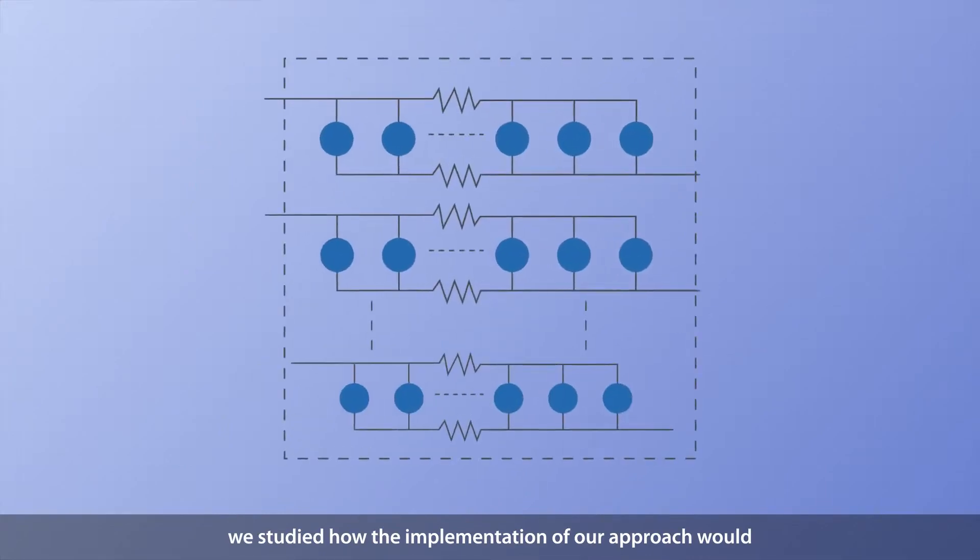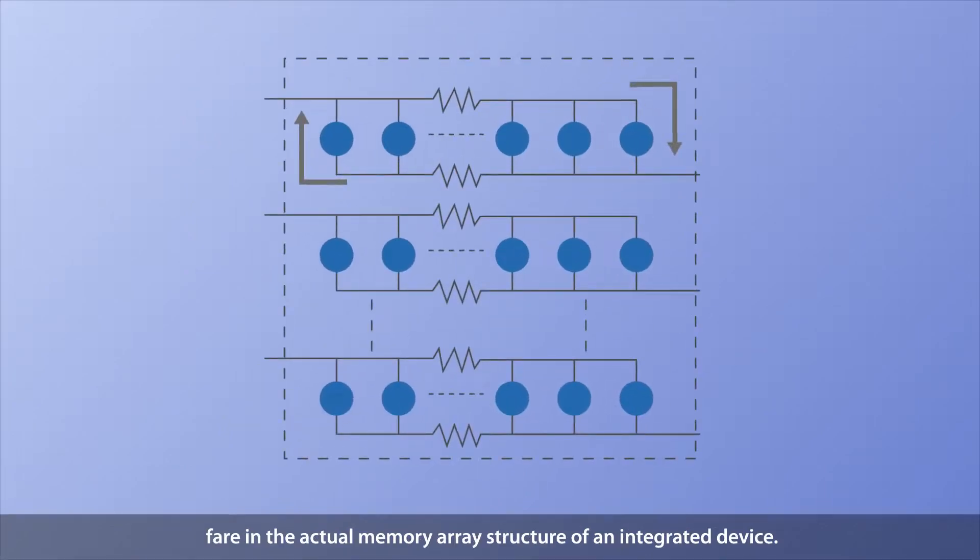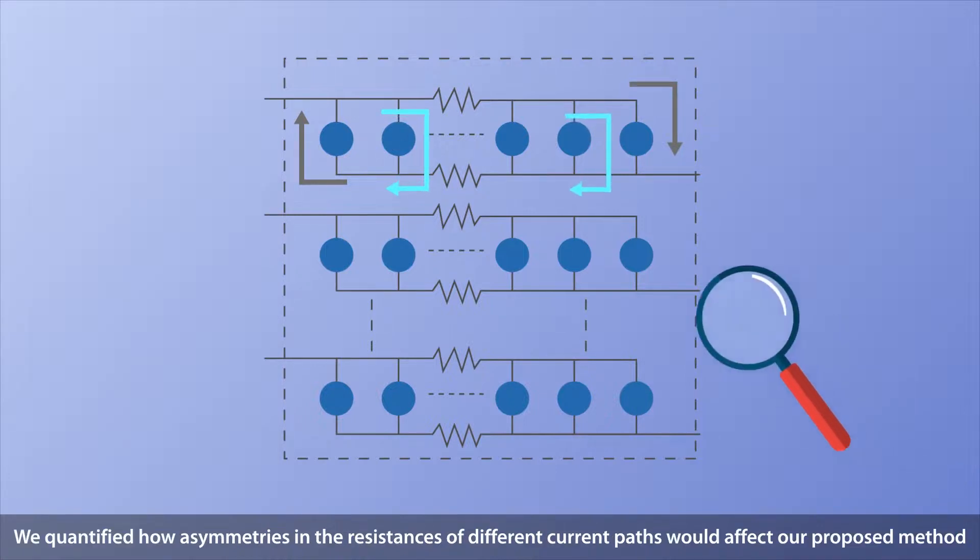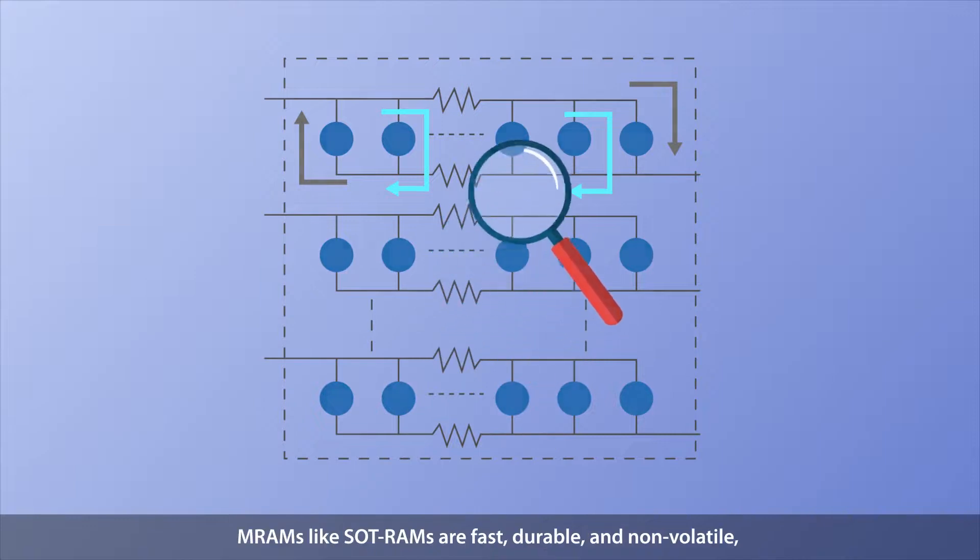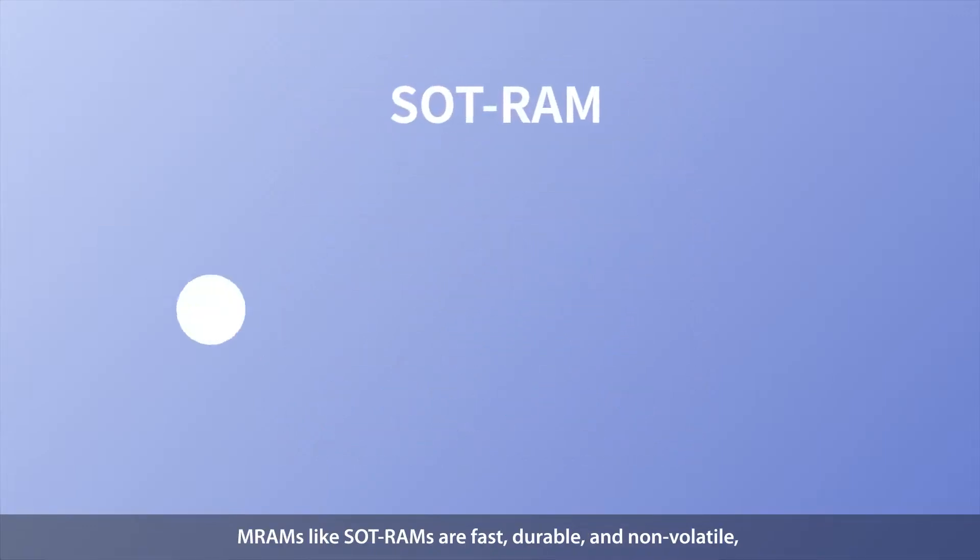Finally, we studied how the implementation of our approach would fare in the actual memory array structure of an integrated device. We quantified how asymmetries in the resistances of different current paths would affect our proposed method and examined how to mitigate this issue. MRAMs like SOT RAMs are fast,